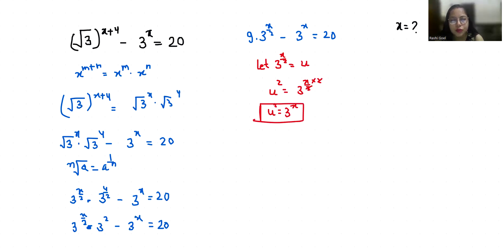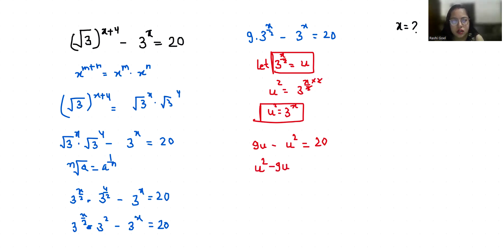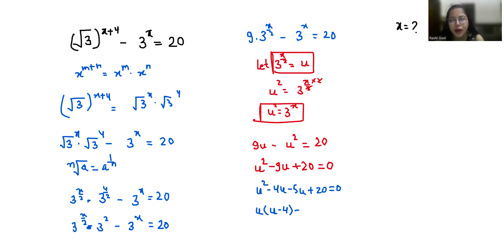The equation becomes 9u minus u squared equals 20, which we rewrite as u squared minus 9u plus 20 equals 0. This is a quadratic equation. We split the middle term as negative 4u minus 5u, giving u squared minus 4u minus 5u plus 20 equals 0, and factoring: u times (u minus 4) minus 5 times (u minus 4) equals 0.